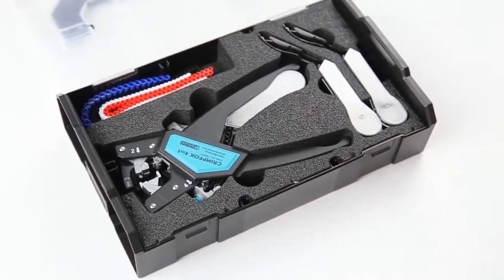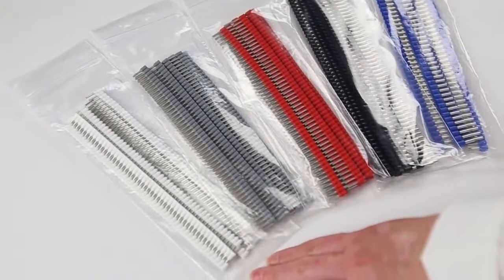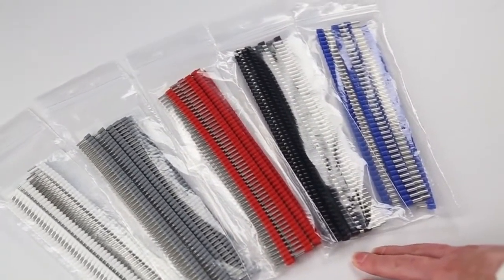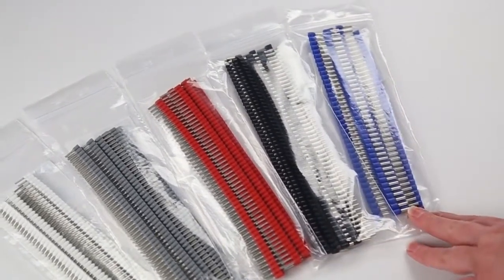The ferrules are sold in packages of 500, 10 strips of 50, for 20 to 16 gauge, and packages of 400, 10 strips of 40, for the 14 gauge.